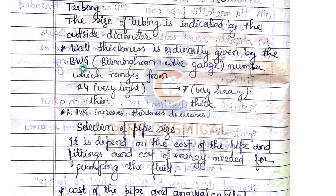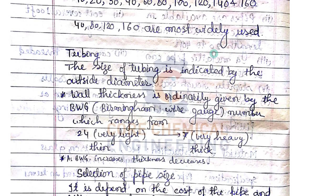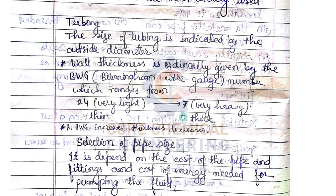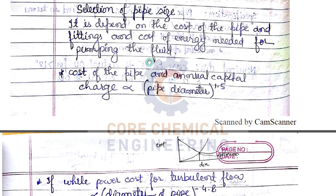The size of tubing is indicated by the outside diameter, while thickness is given by the BWG (Birmingham Wire Gauge) number, which ranges from 24 (very light) to 7 (very heavy). As BWG increases, thickness decreases — the opposite of schedule number, where increasing schedule number means increasing thickness.